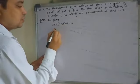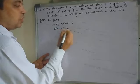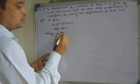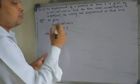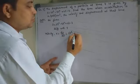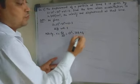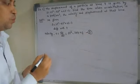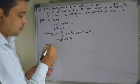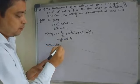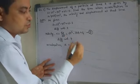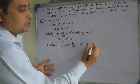As given, displacement is s = 2t³ − 5t² + 4t − 3. Differentiating with respect to time, we get velocity: v = ds/dt = 6t² − 10t + 4. This is equation 1. Now differentiating velocity with respect to time t, we get acceleration: a = dv/dt = 12t − 10. This is equation 2.